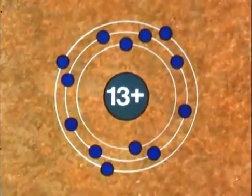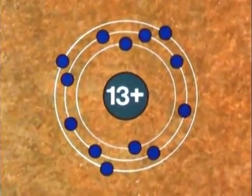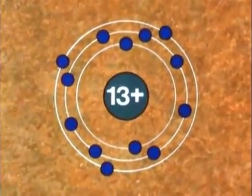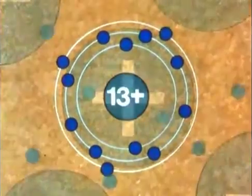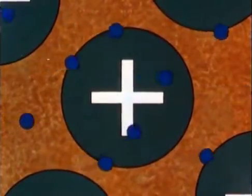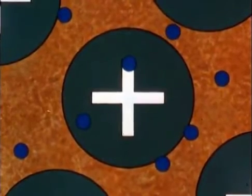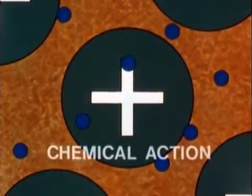We know that the atoms of matter are normally electrically neutral. The electrons and protons exactly balance. And we also know that a movement of electrons is needed to produce an electrical effect, an electric current. So something has got to get the electrons out of the atoms and has to get them moving. One way of doing this comes under the heading of chemistry, and it is called chemical action.